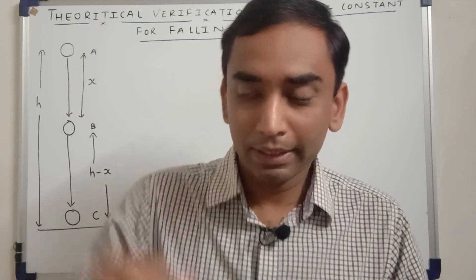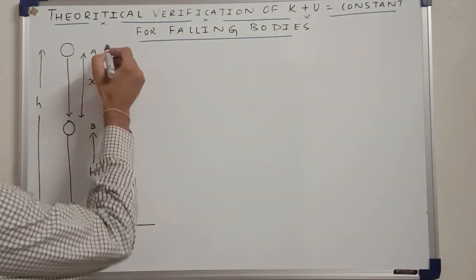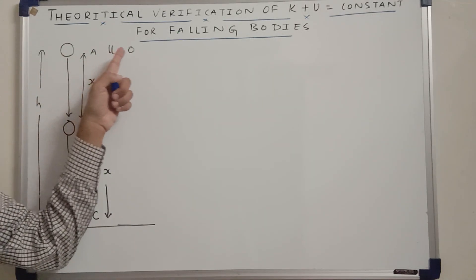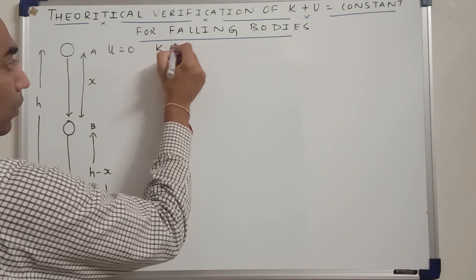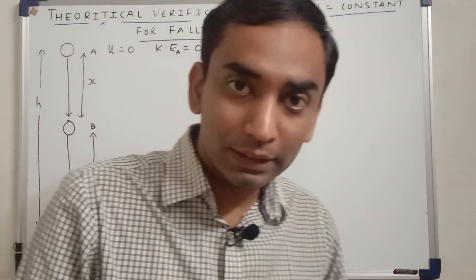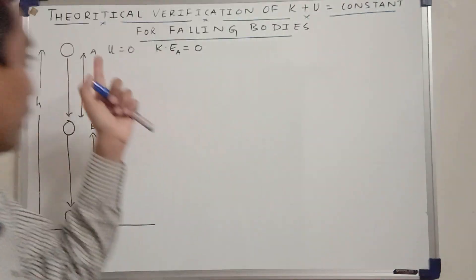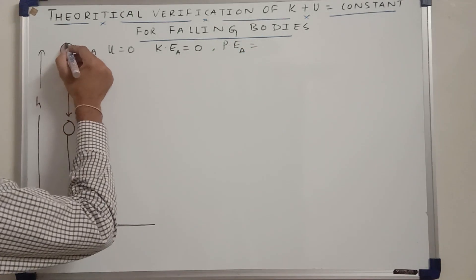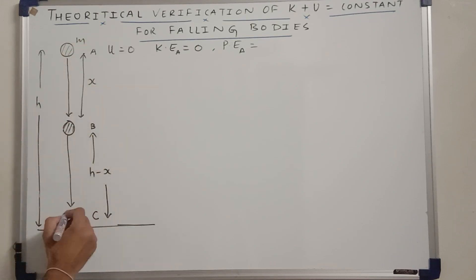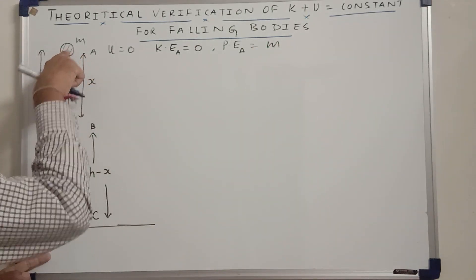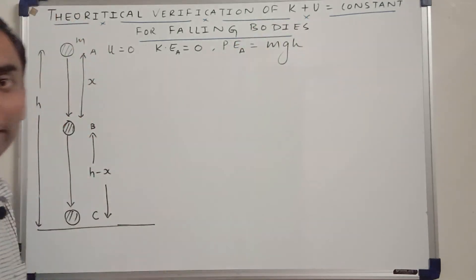When we drop something, you have to understand clearly that the initial velocity is always zero. So when we drop the ball from location A, its initial velocity is zero, due to which its kinetic energy is also zero at location A — because kinetic energy is half times mass times the square of velocity, which is zero here. But it will have potential energy at location A, given by mass M times g times height H.